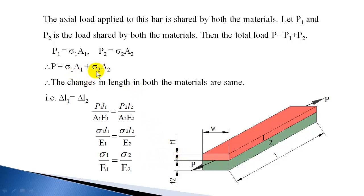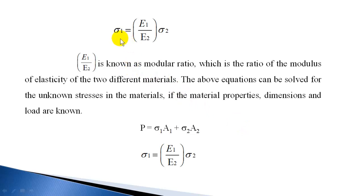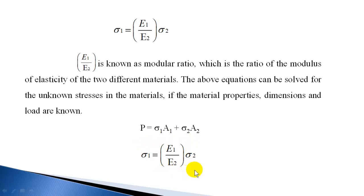So we have two equations: P = sigma1 × A1 + sigma2 × A2, and sigma1 / E1 = sigma2 / E2. From the second equation, stress in material one equals (E1/E2) × sigma2. The ratio E1/E2 is known as the modular ratio, which is the ratio of Young's moduli of the two different materials. These equations can be used to solve for stresses in a composite bar when lengths are equal.